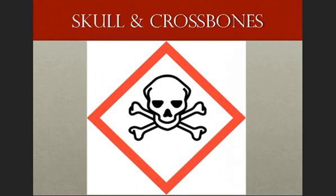The skull and crossbones pictogram is presented on screen and represents acute toxicity that is extremely fatal or toxic. This is the symbol that will appear on the most severely toxic chemicals. Depending on the toxicity of the chemical, the skull and crossbones indicate that the chemical may be toxic or fatal — specifically: fatal if swallowed, fatal if contact with skin occurs, fatal if inhaled, toxic if swallowed, or toxic in contact with skin. Arsenic and carbon monoxide are two examples of chemicals that may require the skull and crossbones pictogram.